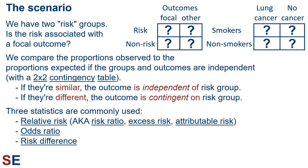Three statistics are commonly used to figure this out: the relative risk, also known as the risk ratio, excess risk, or attributable risk; the odds ratio; and the risk difference. Since we're using data from a sample, we need to calculate these statistics and their confidence intervals to estimate a range for the population relative risk, odds ratio, and risk difference values. We're usually interested in whether the relative risk or odds ratio are different from 1, or the risk difference is different from 0.